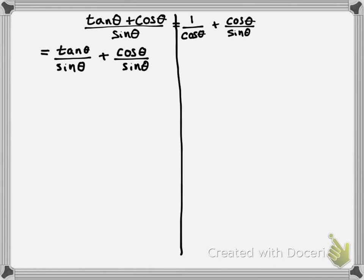Now, I am allowed to split this fraction, and here's how. Think about it this way: if I have these two fractions and I wanted to add them together, I have a common denominator of sine of theta, which means I could just add the two tops — tangent of theta plus cosine of theta — and put it over the denominator of sine of theta, and I'd have the original left side again. So I am allowed to split this; it's just working backwards from adding two fractions.